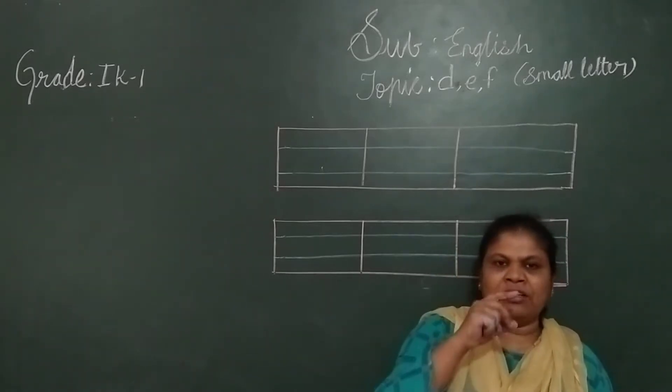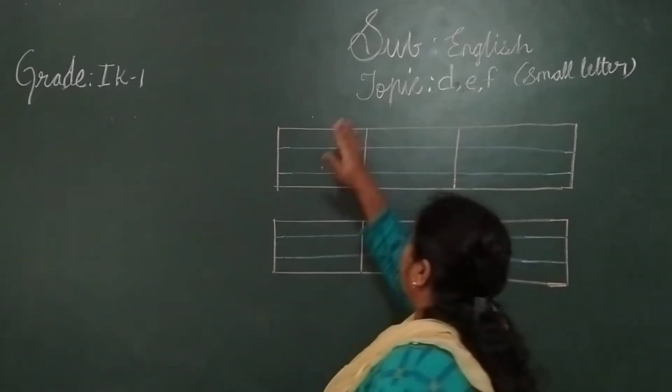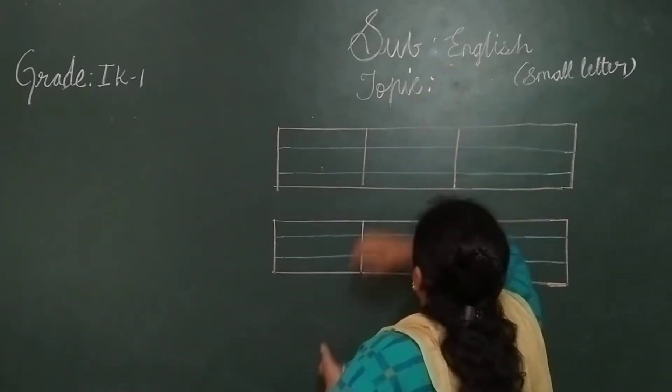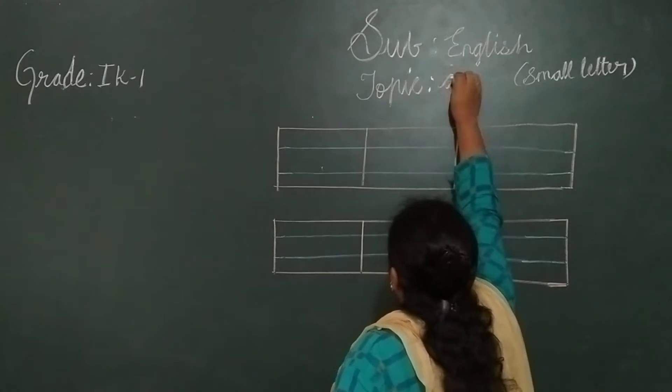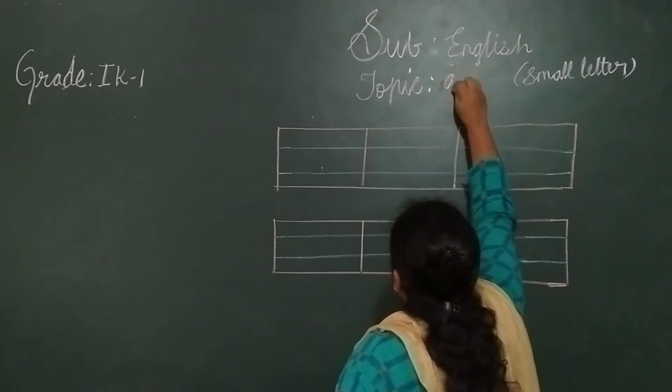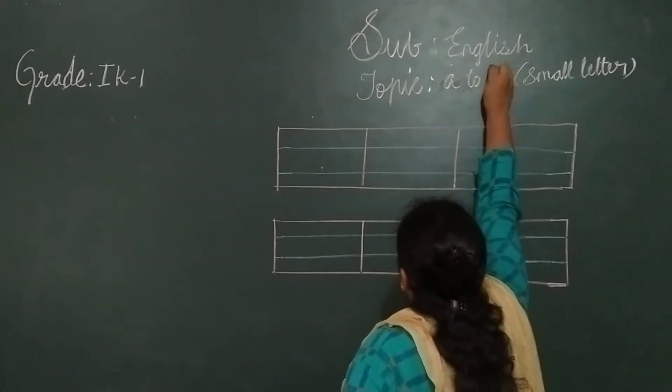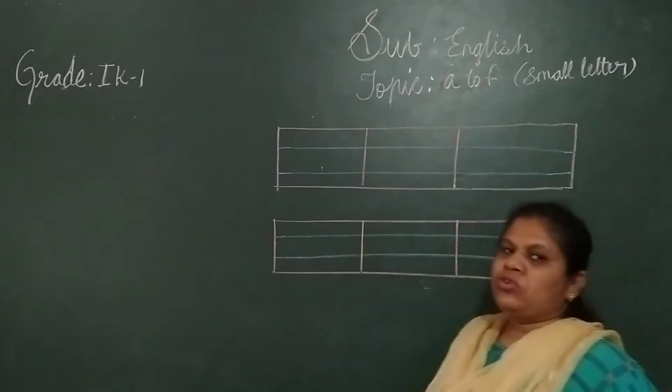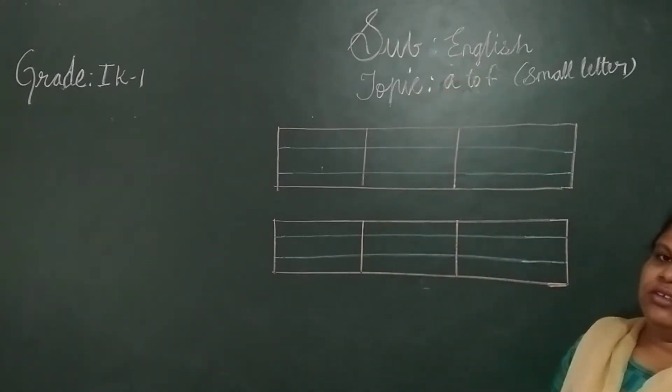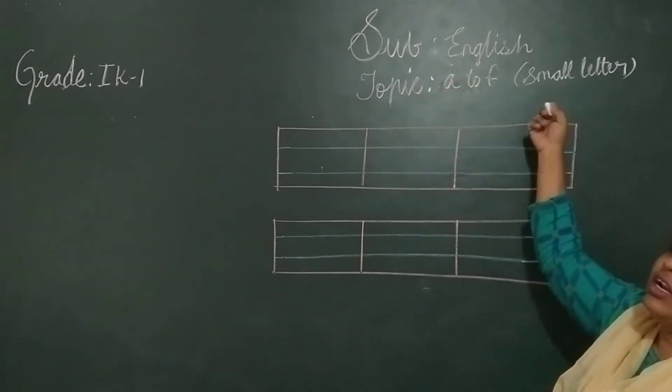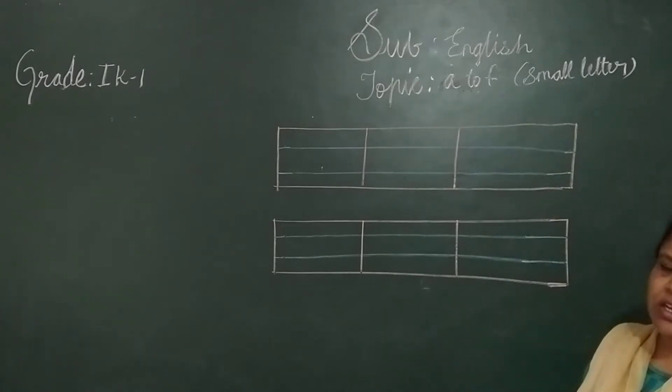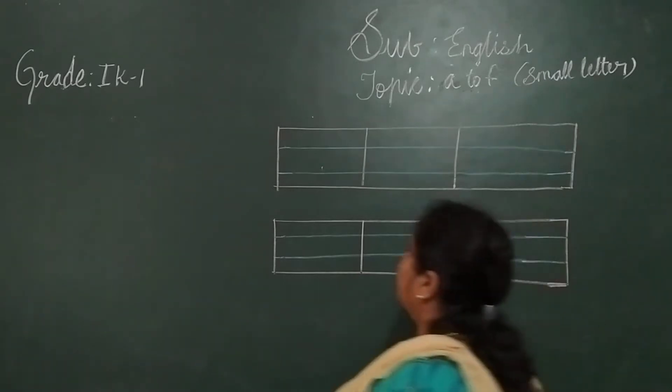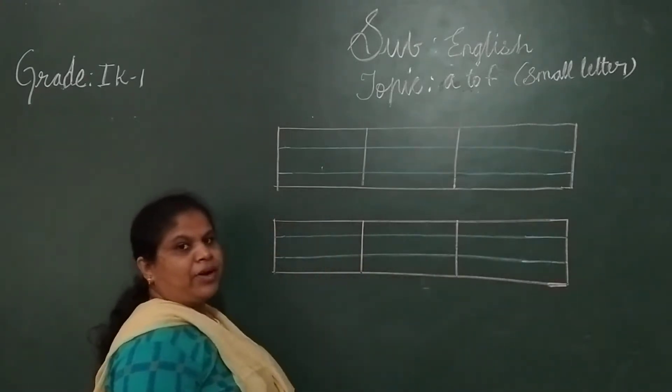Okay children, today as you all have learned small letters from A to F, we are going to revise the letters from A to F. This is called small letter. Okay? These are small letters A to F. So now we will revise one by one.